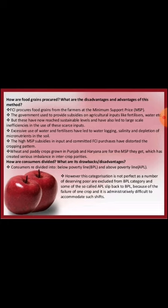How are consumers divided and what are the drawbacks? Consumers are divided into Below Poverty Line, BPL, and Above Poverty Line, APL. However, this categorization is not perfect, as the number of deserving poor are excluded from the BPL category, and some of the so-called APLs slip back to BPL because of the failure of one crop. It is also administratively difficult to accommodate such shifts.